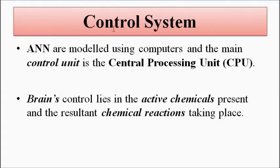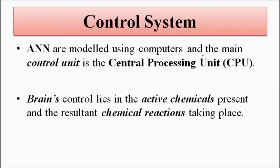The final criterion is the control mechanism or control system. In the artificial neural network, the nodes are designed, modeled, and operated using computers, and the main control unit lies in the central processing unit — this is the main controller of the whole network. But in the human brain, control lies in the chemicals that are present and the various chemical reactions that take place — those control the functioning and operation of the human brain. So in artificial neural networks it is the central processing unit which controls the functioning, while in the brain it is the work of active chemicals and chemical reactions.